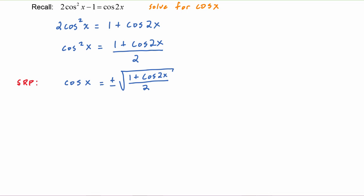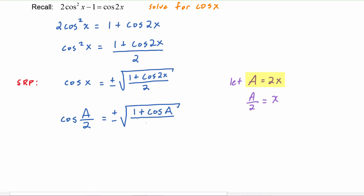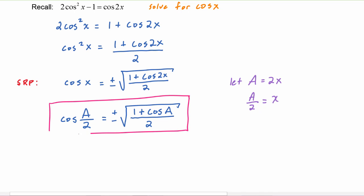Similarly to what we just did for the half angle identity for sine, we will let a equal two x so that a over two will substitute in for x. On the left hand side it will become cosine of a over two, and the right hand side becomes plus or minus the square root of one plus cosine of a — because a is going in for two x — over two. This is the half angle identity for cosine.